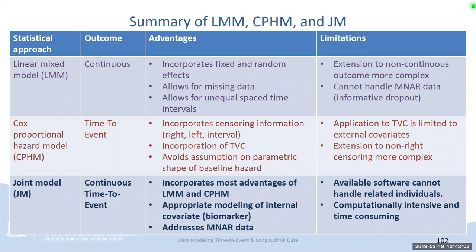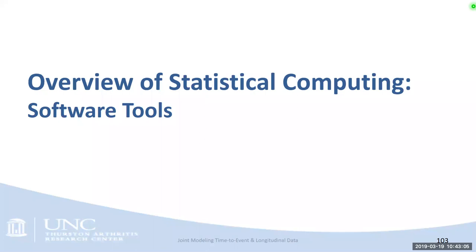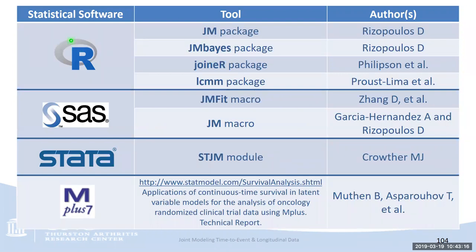To finish, here is an overview of statistical computing — software tools for incorporating these model methods. Many available packages exist, many recent and building on older packages. In SAS there are a couple of macros available. Stata has an available module. Mplus also has available applications for joint models. There is a lot of emergence in packages and software that can incorporate joint models.